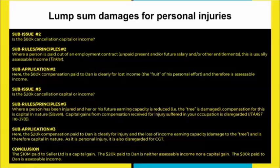However, the $20,000 reimbursement of medical expenses is probably going to be capital. Again applying the tree and fruit analogy: a person's earning capacity itself is a capital asset, and when that's reduced it's deemed by the courts to be capital in nature — that's Slavin. Where you have personal injury and occupation, there's a specific section in the Income Tax Act 1997 which states you actually disregard the capital gain as well. So the $20,000 is on capital account, and you're not even liable for CGT.